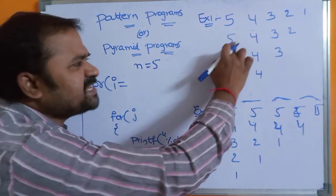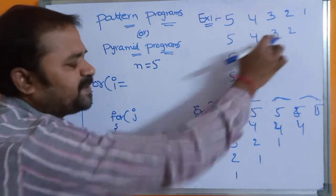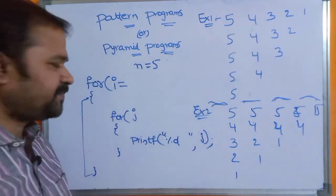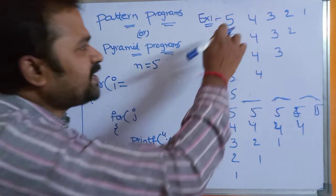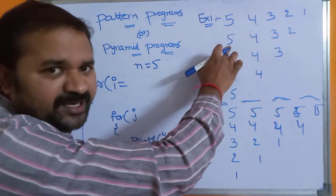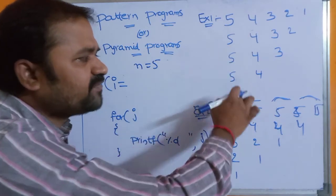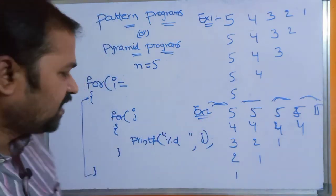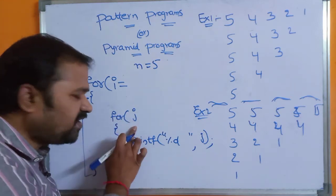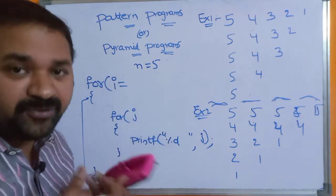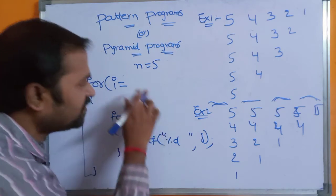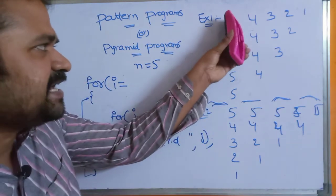After displaying each value, we display a blank space for better visibility. Now, what is the starting value of each row? Every row starts with 5, so the starting value of j is N (which is 5). We display j value, so first we write the logic for the innermost j loop. The starting value of j is N.